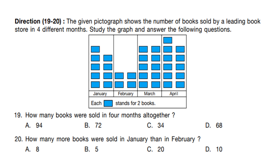Questions 19 and 20. The given pictograph shows the number of books sold by a leading bookstore in 4 different months, where each block stands for 2 books. Question 19: How many books were sold in 4 months altogether? There are 34 total blocks, and 34 multiplied by 2 is 68. Our answer is option D, 68.